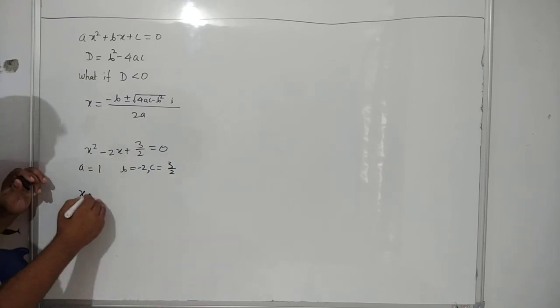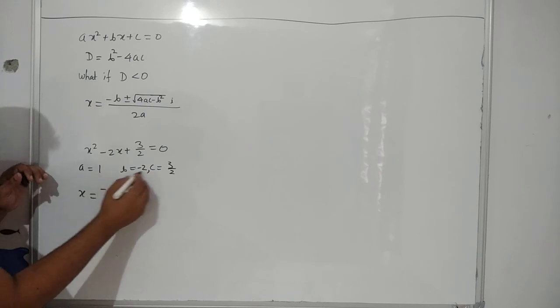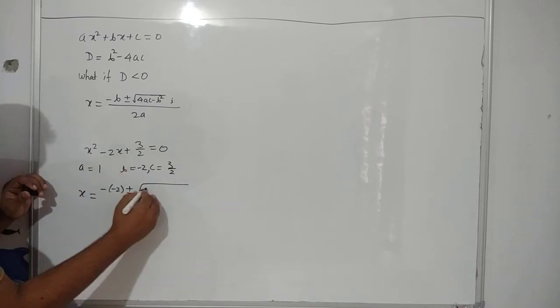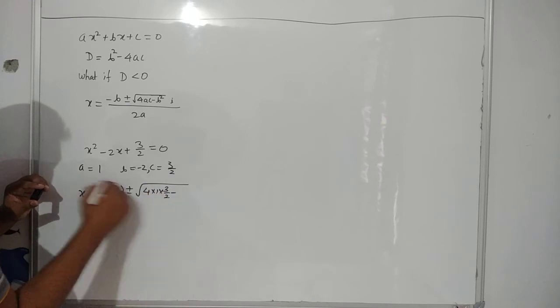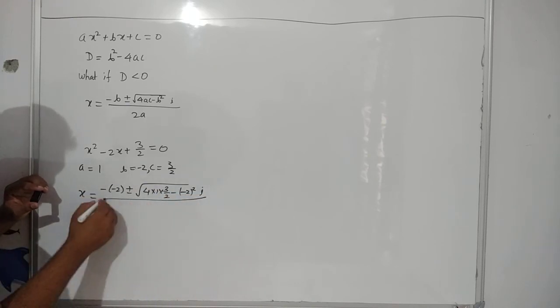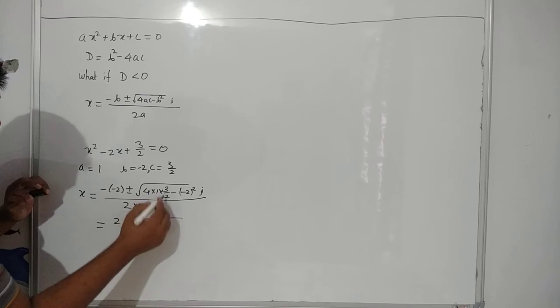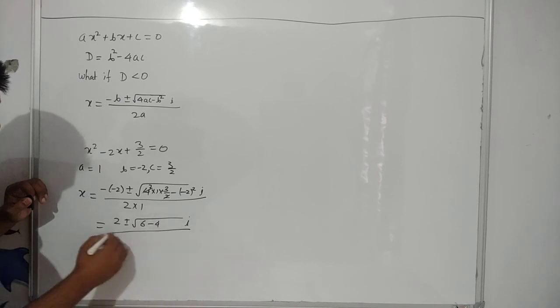Now, let us evaluate the value of x using this formula. So, minus b in place of b, you have to substitute minus 2 plus minus root under 4ac. In place of a, you have 1. In place of c, you have 3 by 2 minus b square, that is minus 2 whole square into iota whole upon 2 into 1. So, you have 2 plus minus under root, this get cancelled, 6 minus 4 iota upon 2.